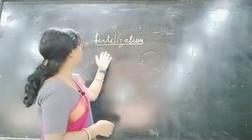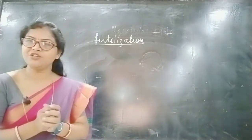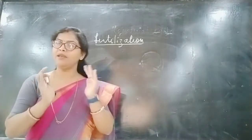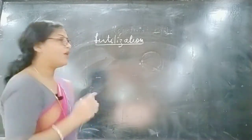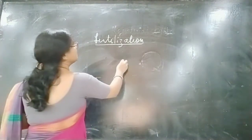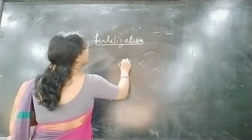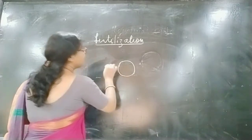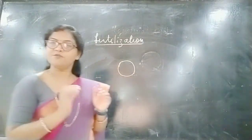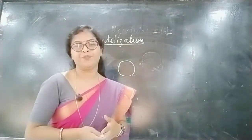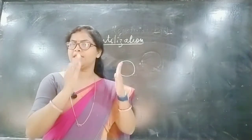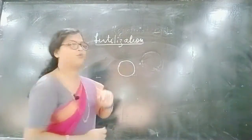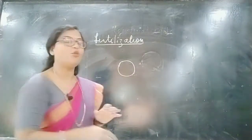First of all, what do we mean by fertilization? Fertilization means the fusion of gametes — male and female gametes, sperm and ovum. When sperms are released into the female reproductive part, millions of sperms run towards the ovum. But only some hundreds of them actually reach the ovum — not all.